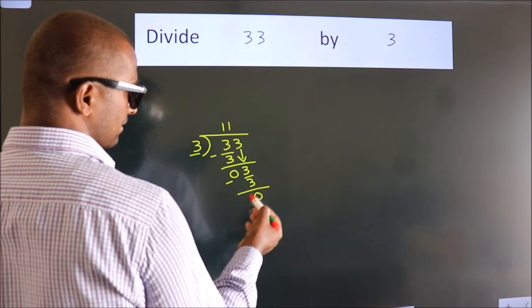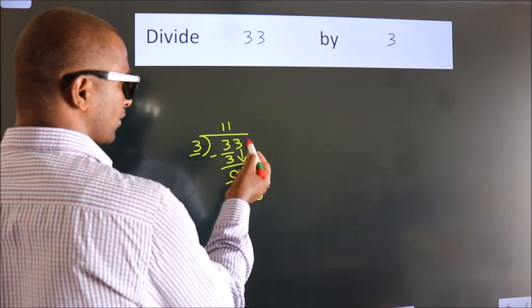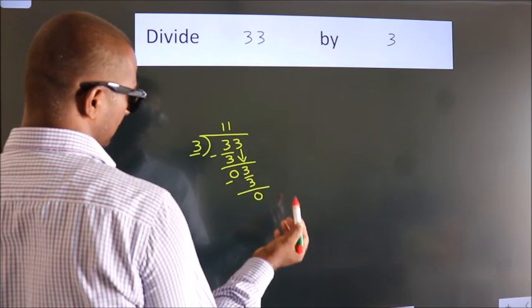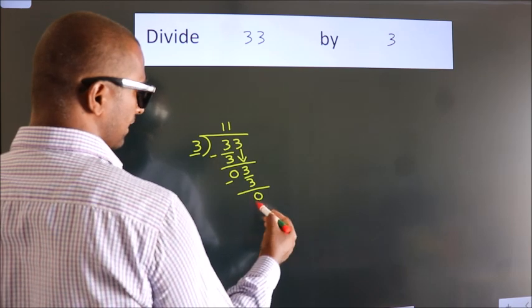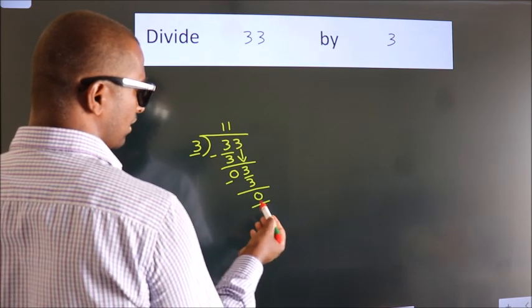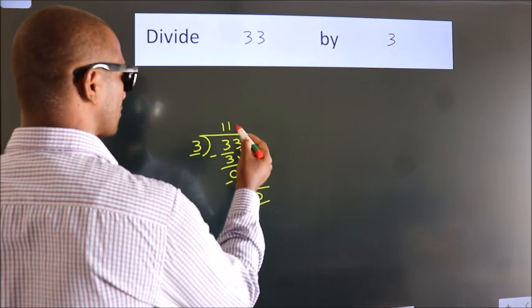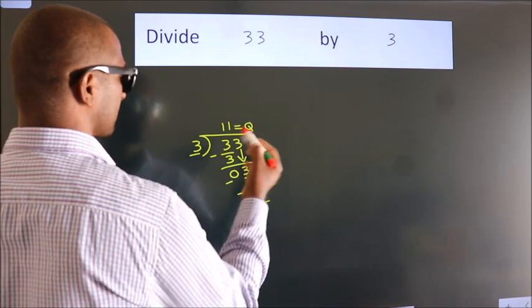After this, there are no more numbers to bring down. We got remainder 0, so this is our quotient.